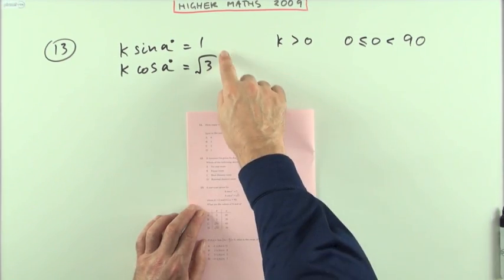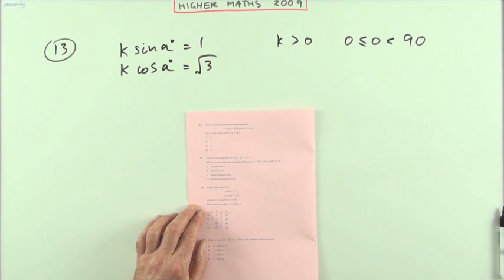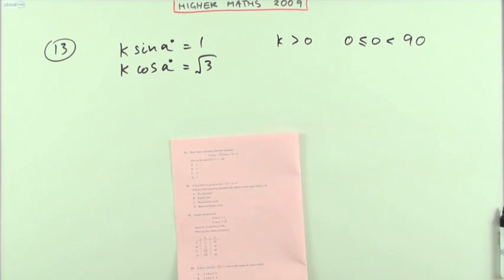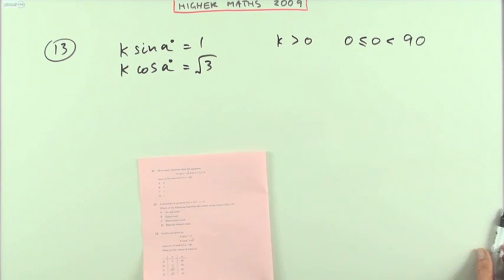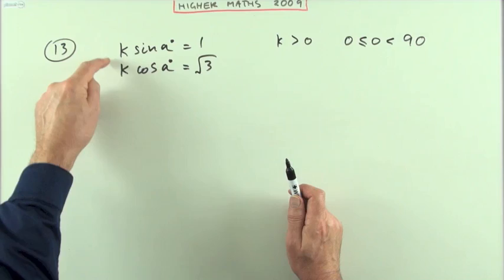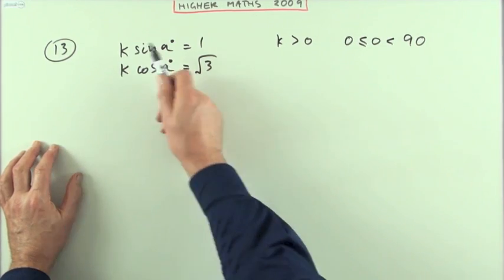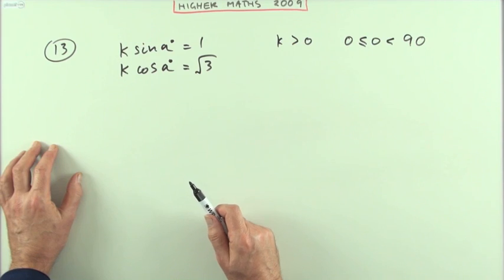Number 13, a pair of simultaneous equations you should recognize from the wave function. What are the values of k and a? Well, you have a pair of simultaneous equations, so you have to find combinations that will eliminate one of them.